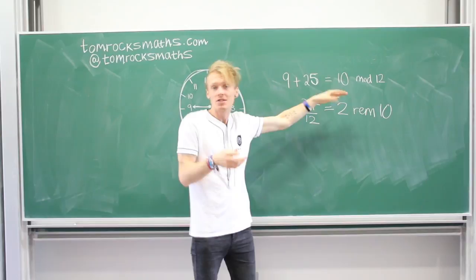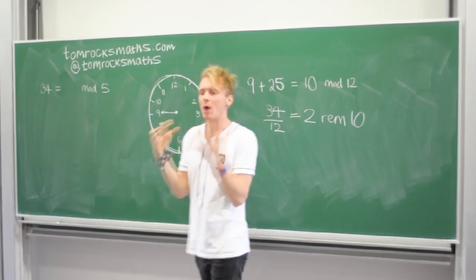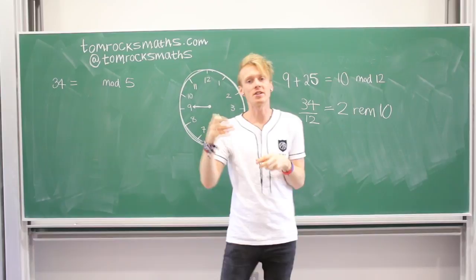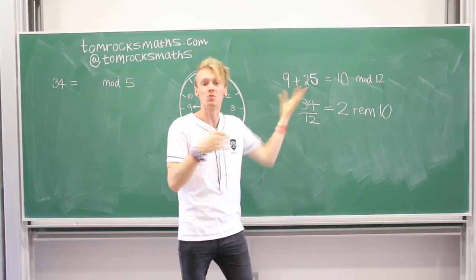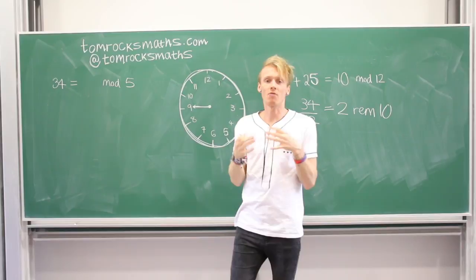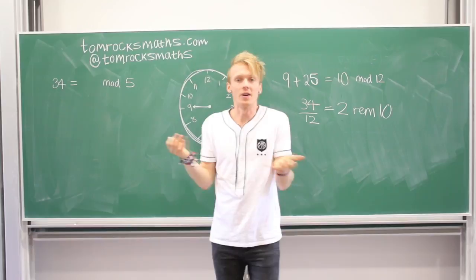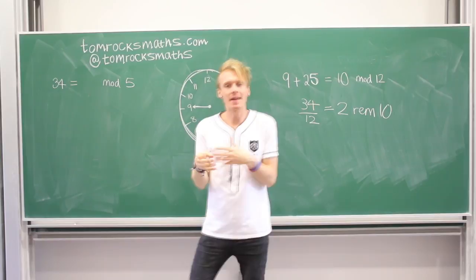All of the examples so far have been mod 12 because we were thinking about the 12-hour clock. But you can use any number. Let's take 34 — which is our 9 plus 25 — and think about what 34 is in mod 5. We proceed in the same way: how many lots of 5 go into 34? Well, 6 fives give you 30, and then there's 4 left. So the answer is 4. You're just thinking about how many lots of your modular number go into the number you want, and what's the remainder — in this case, just 4.